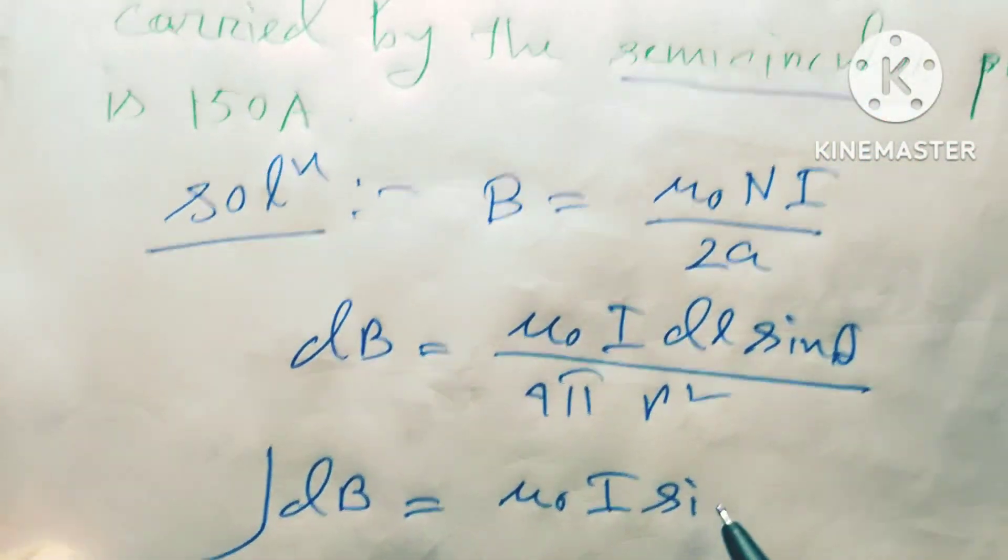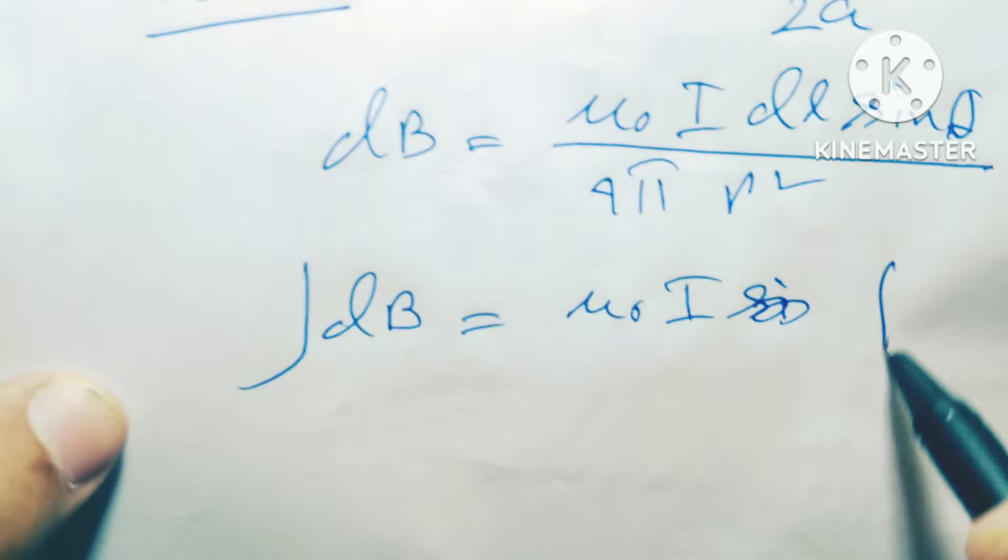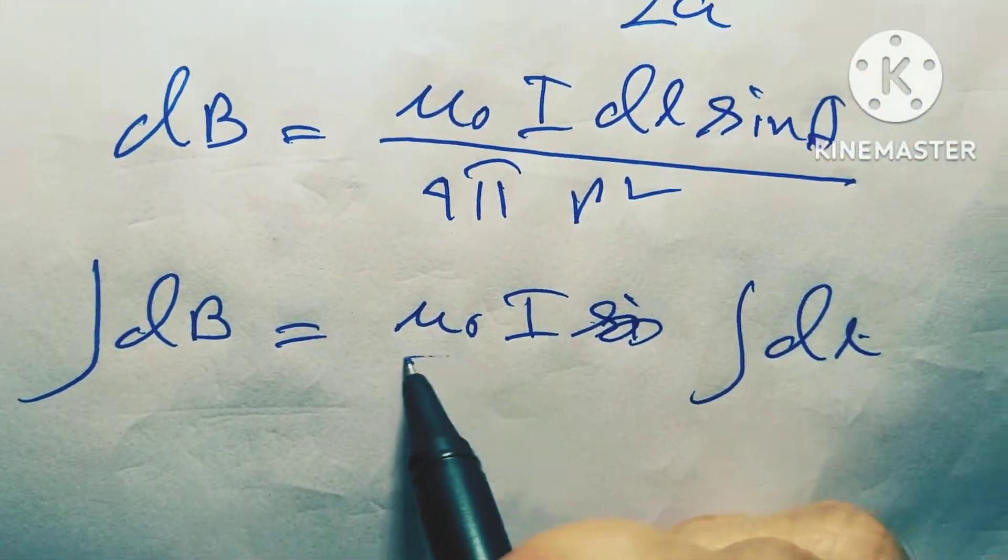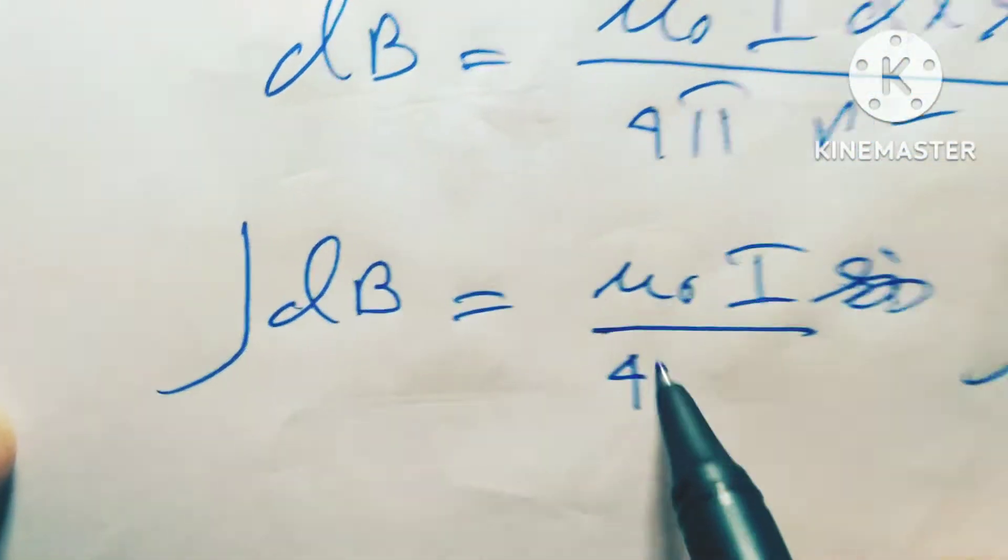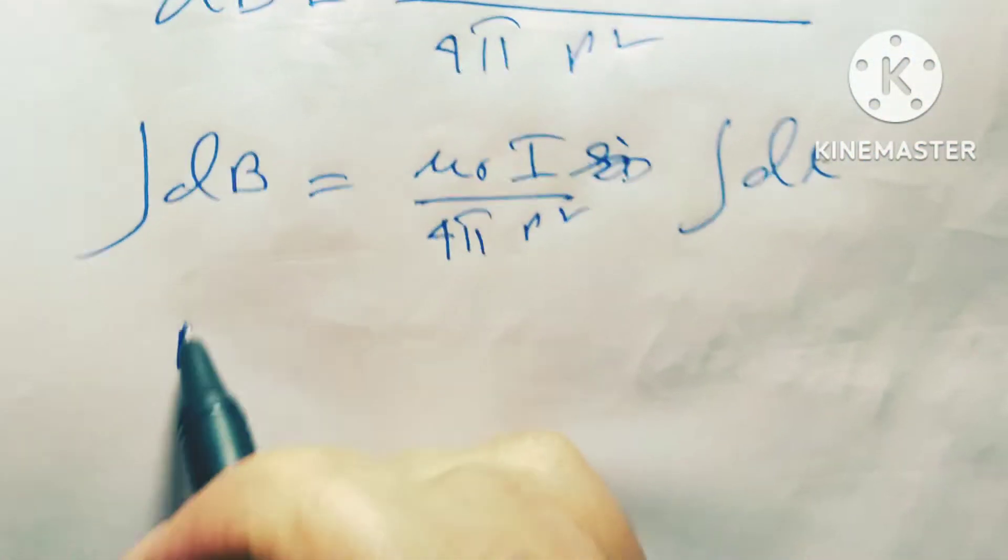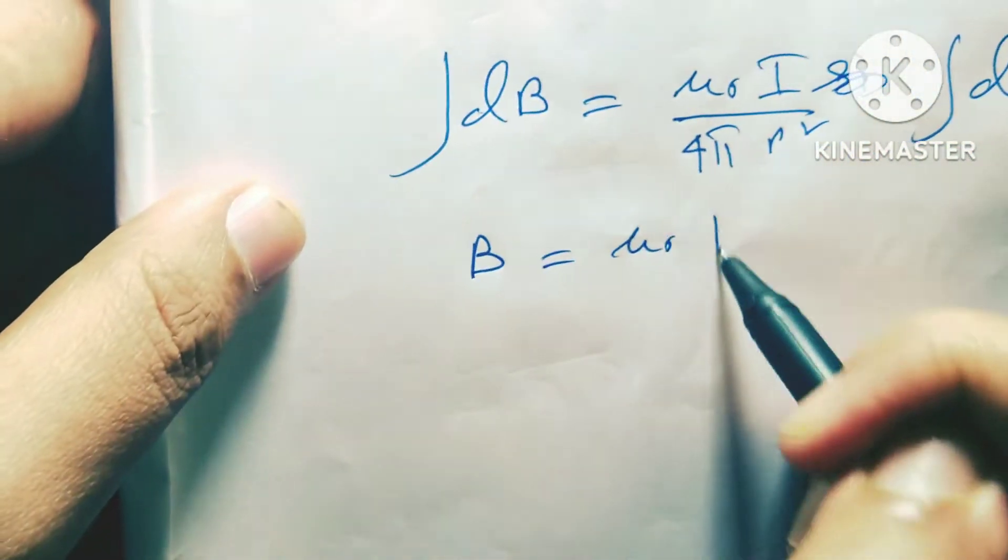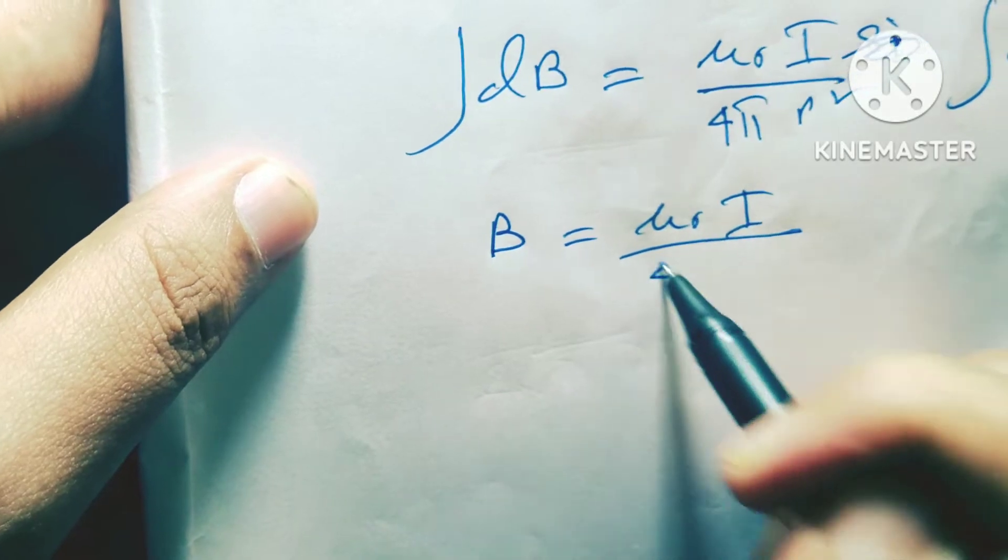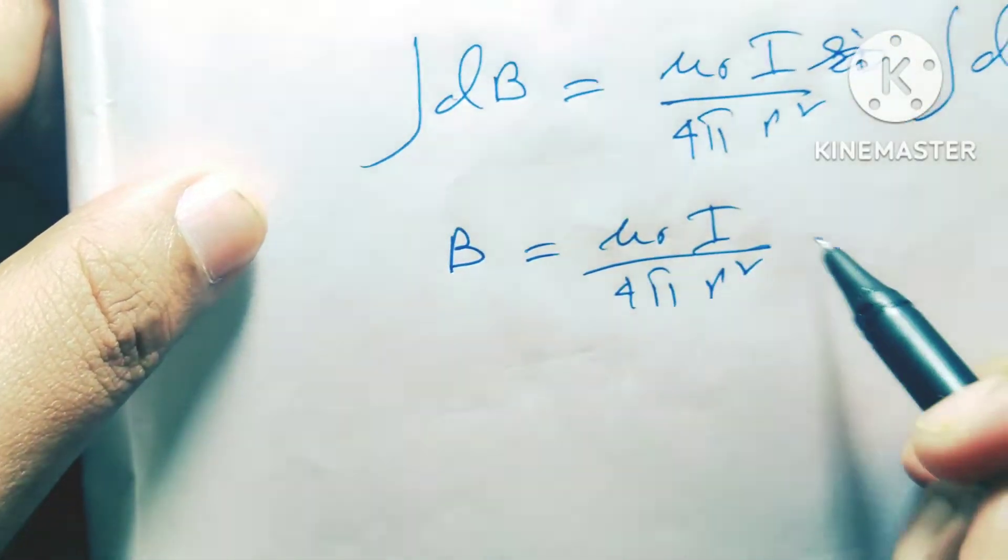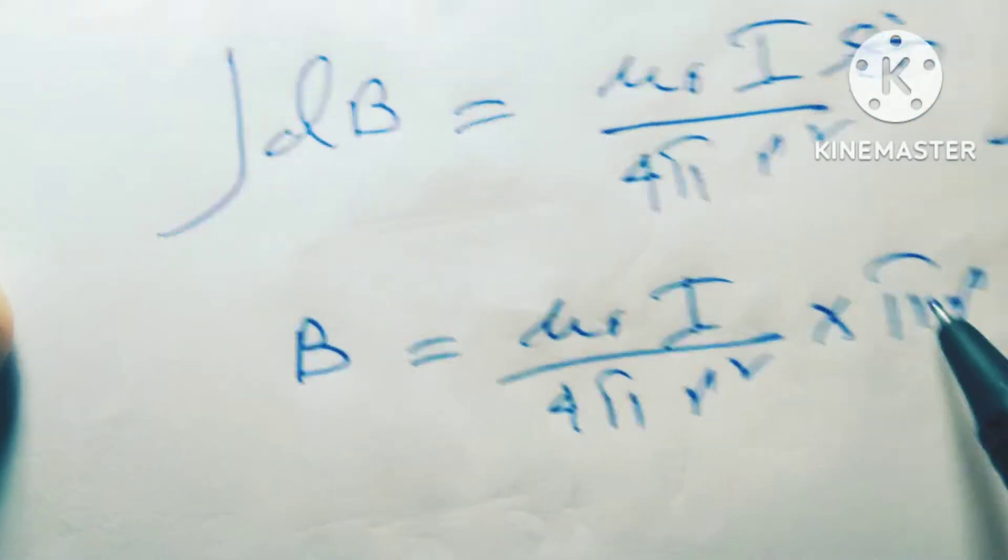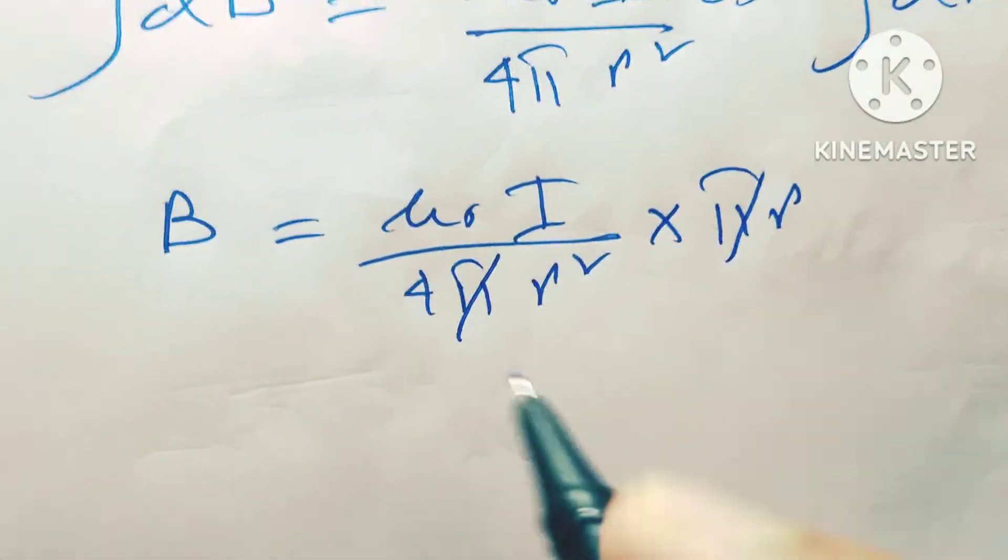Sin theta is equal to 90 degree, so i and dl divided by 4π r square. B equals to μ₀ i divided by 4π r square into πr. So π π cut and we get the simplified form.